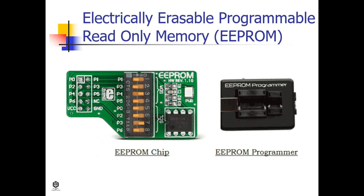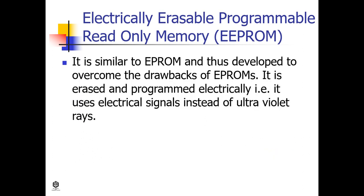EEPROM stands for electrically erasable programmable read-only memory. It is similar to EPROM but was developed to overcome the drawbacks of EPROM. It is erased and programmed electrically, using electrical signals instead of ultraviolet rays. The erasing and programming of data takes 4 to 10 milliseconds. Any byte can be erased at a time instead of the entire chip. The chip can be erased and reprogrammed around 10,000 times, though the process is flexible but slow.